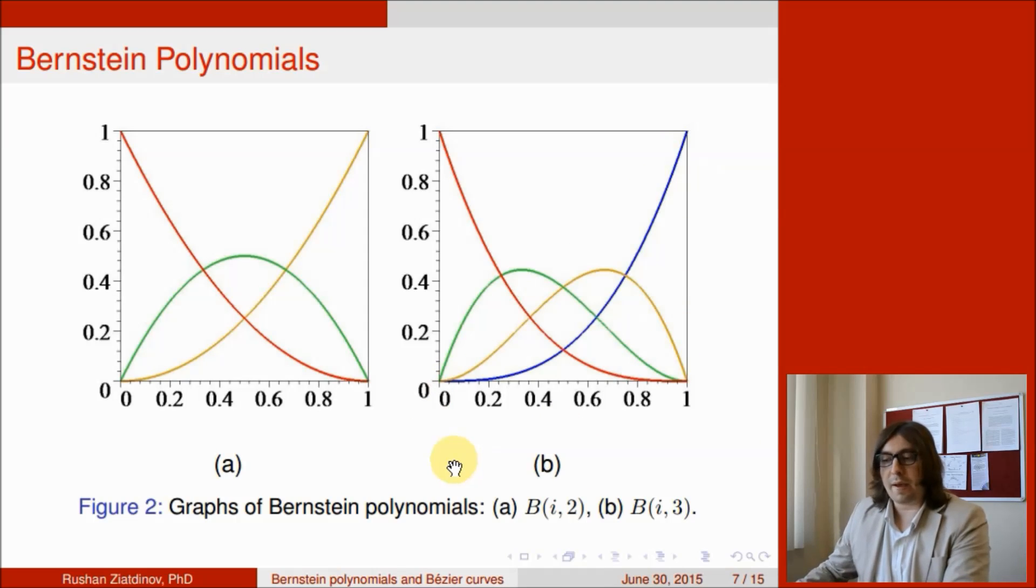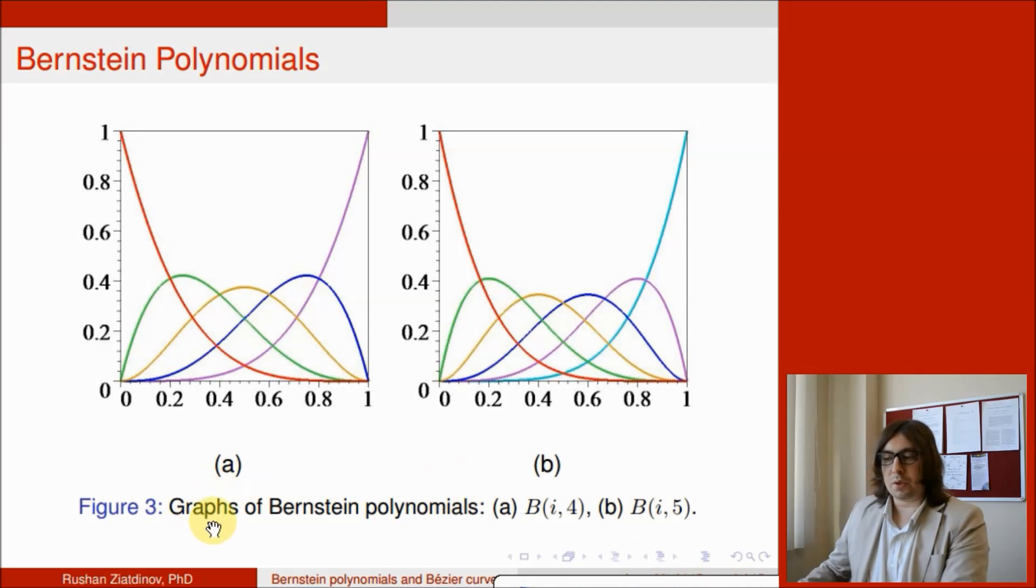The next figure shows the graphs of Bernstein polynomials corresponding to the polynomials given as a and b. B_i,2 has three graphs because i has values from 0 to 2, and b_i,3 has four graphs. The next graph is showing Bernstein polynomials b_i,4 and b_i,5.